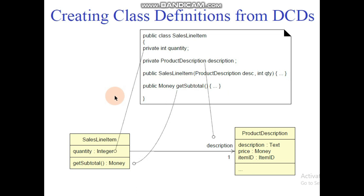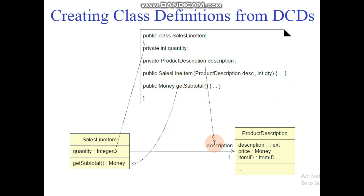Here is public money getSubtotal — this is also a method. In the SalesLineItem class, we have a getSubtotal function with return type money. We created a money object and called the getSubtotal function. In this way, we have designed class diagrams and created class definitions from them.